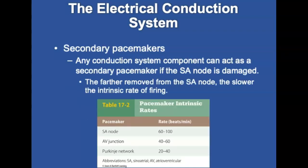Any conduction system component can act as a secondary pacemaker if the SA node becomes damaged or suppressed. The farther removed from the SA node, the slower the intrinsic rate of firing will be. If the SA node is damaged, the AV junction might begin firing at its own rate. If both the SA and AV nodes are not working, the Purkinje fibers will initiate an impulse.